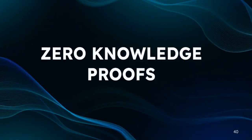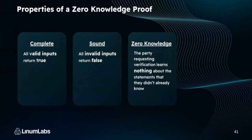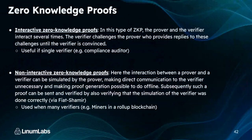Let's look into zero knowledge proofs. There are three properties: they must be complete, meaning all valid inputs return true; they must be sound, meaning all invalid inputs return false; and they must have zero knowledge, meaning the party requesting verification learns nothing about the statements they didn't already know. There are two types: interactive and non-interactive. In the interactive type, the prover and verifier interact several times — the verifier challenges the prover who provides replies until the verifier is convinced. You can use this with a single verifier like a compliance auditor.